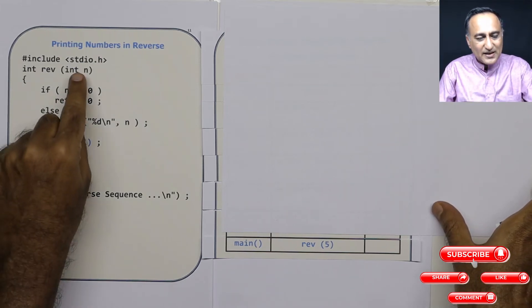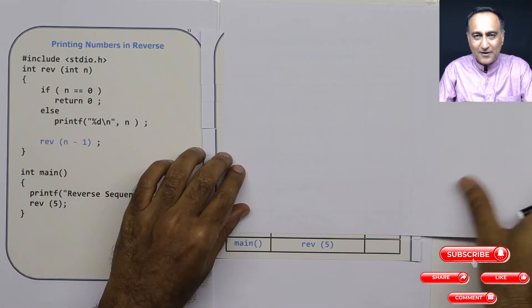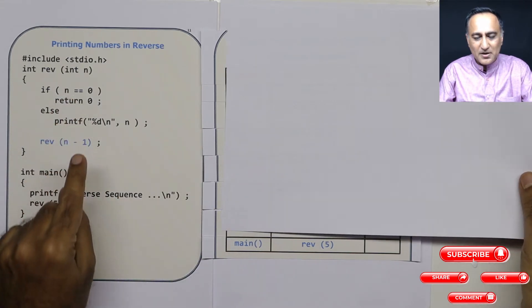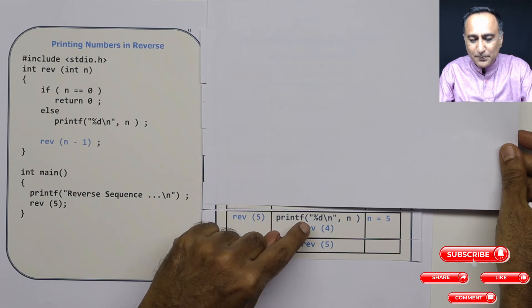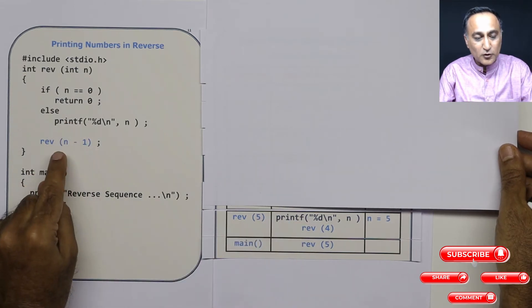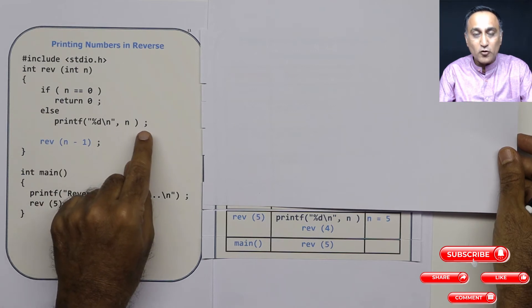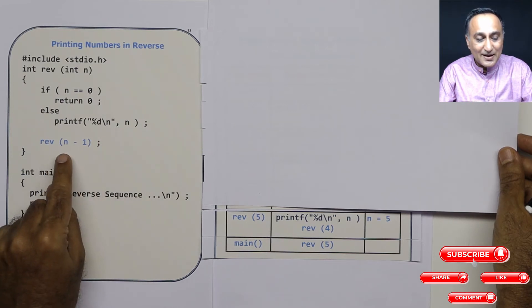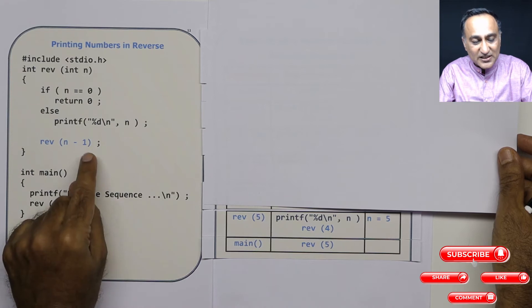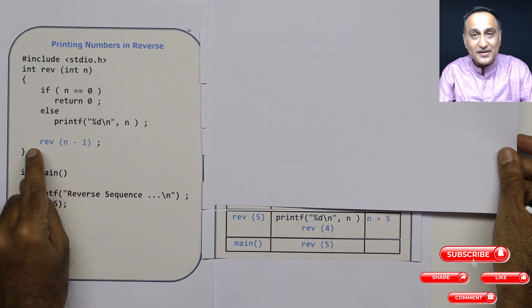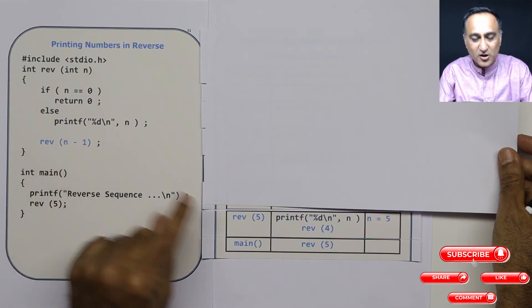Then what happens is the value of n now is 5. So 5 equal to 0 is false. So I'm going to come here and if you see the printf is first, the printf is before the reverse. So it's automatically going to print 5. So you're going to get 5 on the screen. Then I'm calling reverse. Since I'm calling in recursion, this frame cannot be popped because this has not yet completed execution. It is still executing.